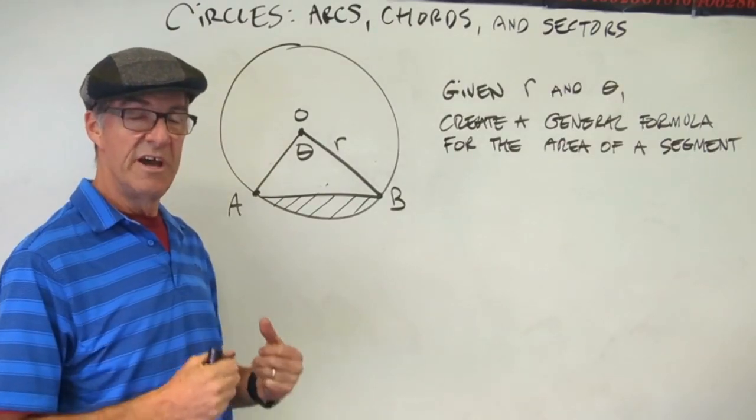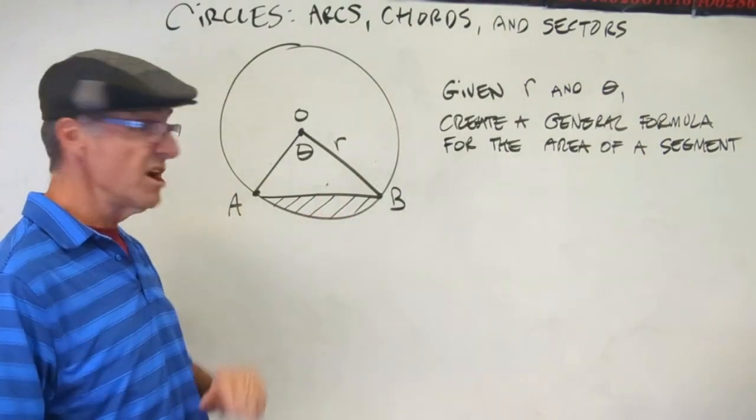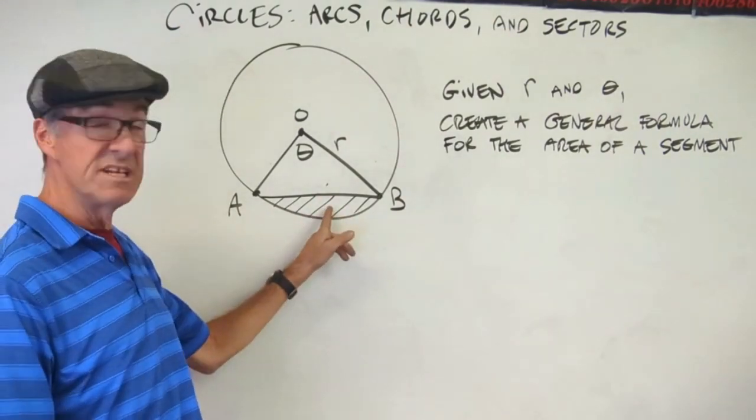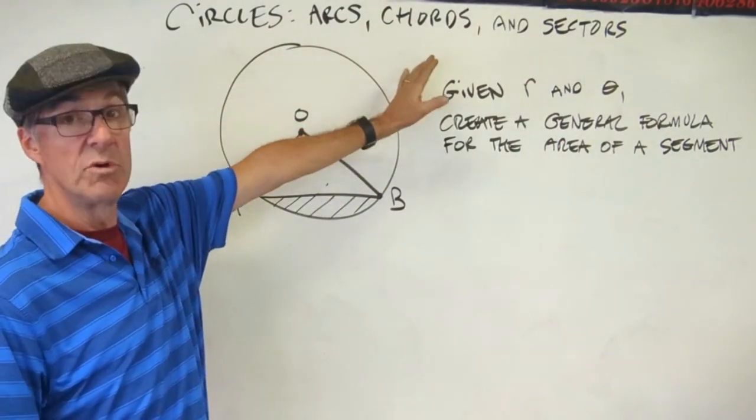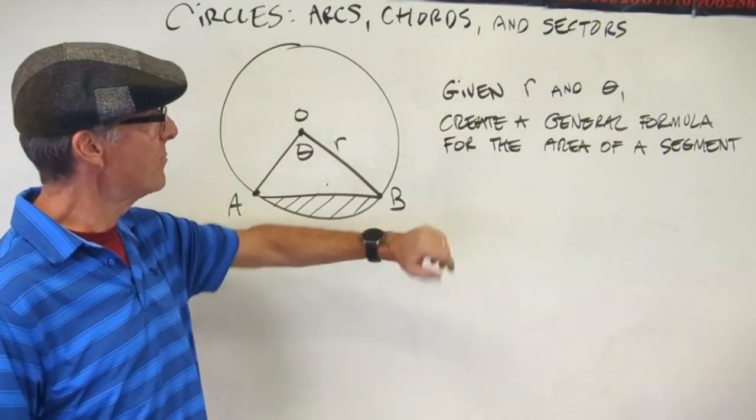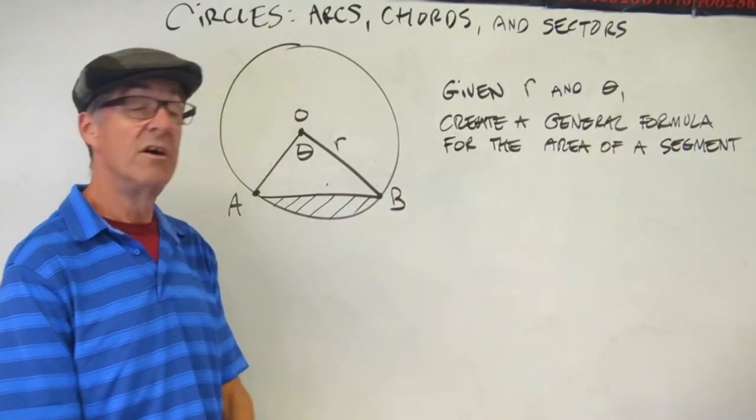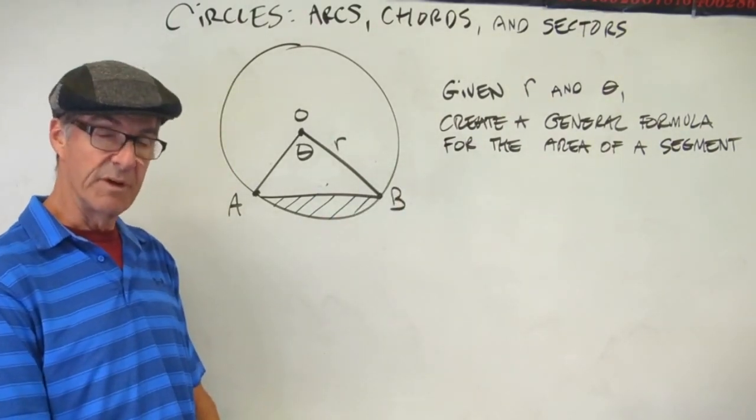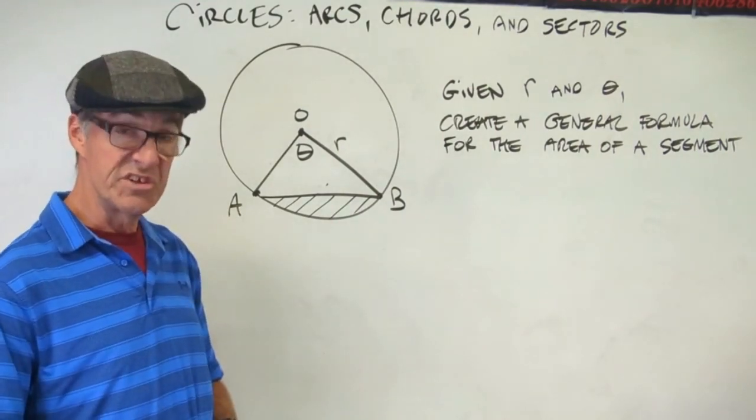I'm going to lead you through a critical thinking exercise that builds on what we just did. Notice my diagram is the same. My segment area shaded here is the same. But now I'm not giving you what r and theta are. And now the prompt is: given r and theta, create a general formula for the area of a segment. So pause the video and write a first step for that.